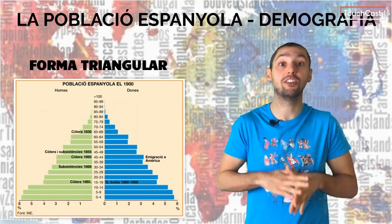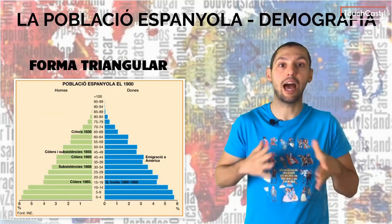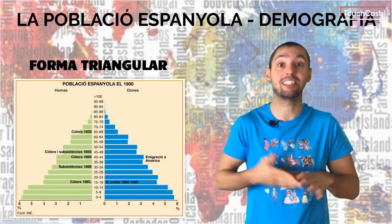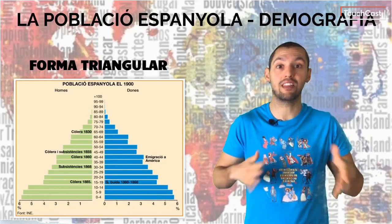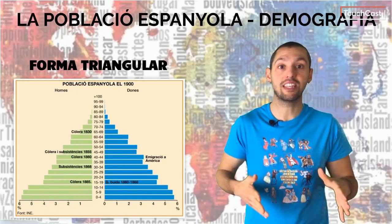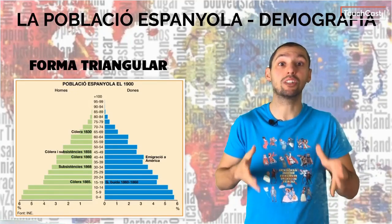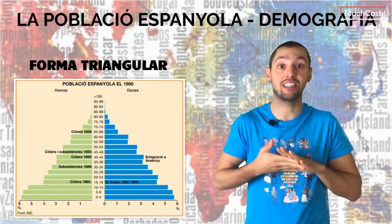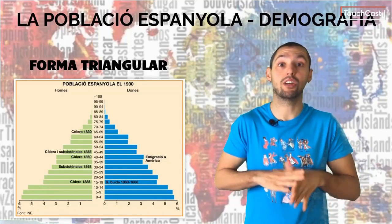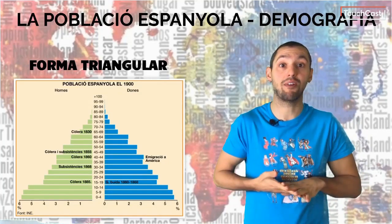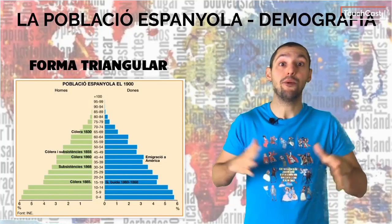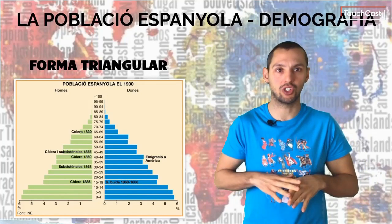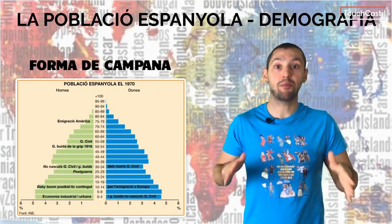La forma triangular es correspon amb l'Espanya del 1900, caracteritzada per una població jove, amb una base ampla i la seva gradual disminució, a causa d'unes altes taxes de mortalitat i una esperança de vida baixa. S'han d'assenyalar les causes de les altes mortalitat i natalitat, així com les conseqüències del gran percentatge de joves, el qual suposa una forta demanda de llocs de treball.